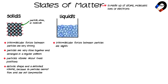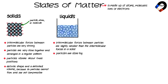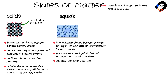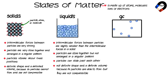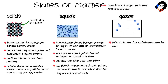Solids have a definite shape and a definite volume because its particles cannot flow and are not compressible. Liquids: the intermolecular forces between particles in a liquid are slightly weaker than the intermolecular forces in a solid. This causes the particles to be close together but not arranged in a regular pattern. The particles in a liquid can slide past each other. Liquids have no definite shape but do have a definite volume.